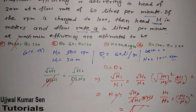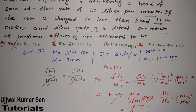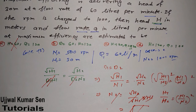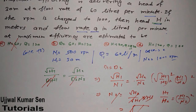After finding h2 = 120 m, cross-check the options. Only one option matches this head value. I've seen many questions where finding one value narrows it to a single option, so you don't need to solve further — but do verify the answer is accurate before marking it.